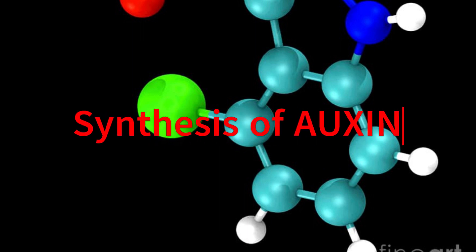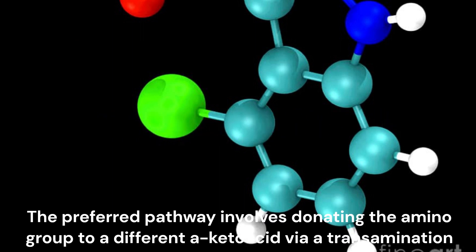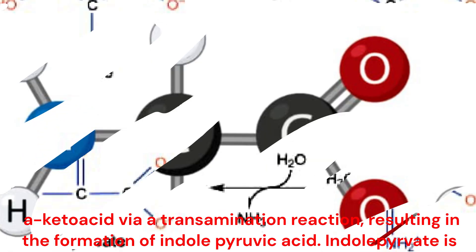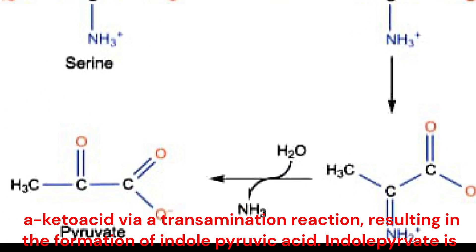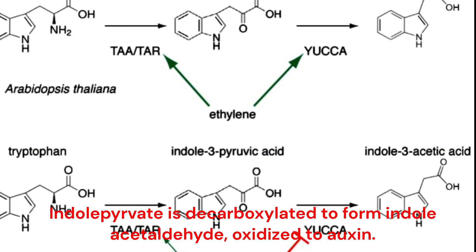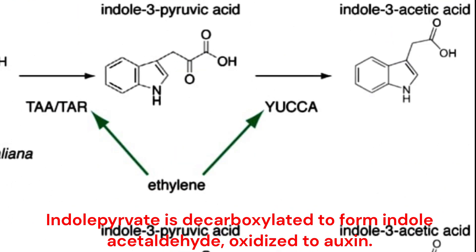Synthesis of auxin: The preferred pathway involves donating the amino group to a different acetoacid via a transamination reaction, resulting in the formation of indolepyruvic acid. Indolepyruvate is then decarboxylated to form indoleacetaldehyde, which is oxidized to auxin.